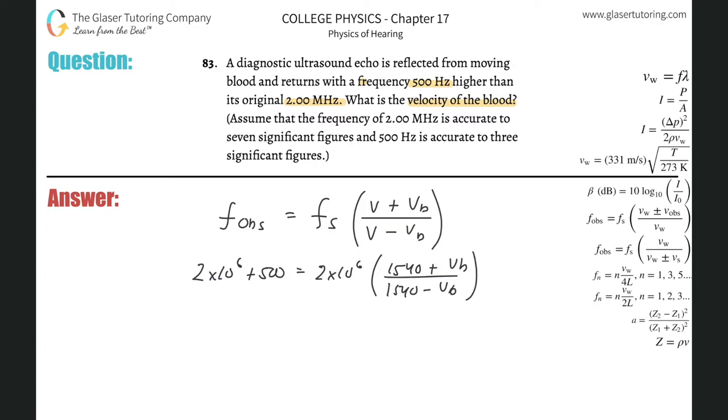Add these together and divide by 2 times 10^6. So (2 times 10^6 plus 500) divided by 2 times 10^6 gives about 1.00025. That equals (1540 plus v_b) over (1540 minus v_b). Cross multiply and distribute: 1540 times 1.00025 equals 1540.385 minus 1.00025 v_b, which equals 1540 plus v_b.